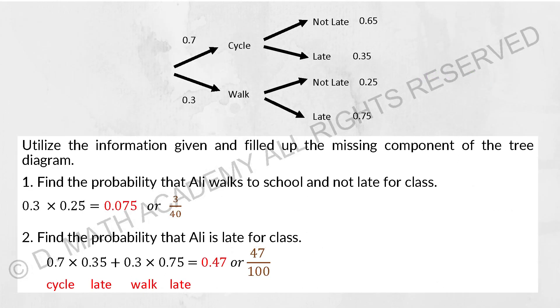So for the next one, it is actually probability as well but it was being asked in tree diagram form. Find the probability that Ali walks to school and not late for class. So walk to school is 0.3 and not late for class is 0.25. So the final result is 0.3 times 0.25 equals to 0.075, or you can write it as 3 over 40. But for the next one, find the probability that Ali is late for class. It can be cycle and late, or walk and late. So there's two different conditions. Multiplying and add them up, you will get 47 over 100 or 0.47.